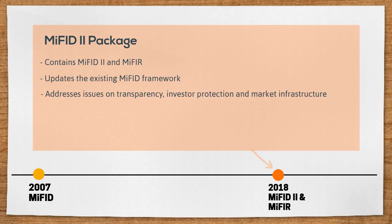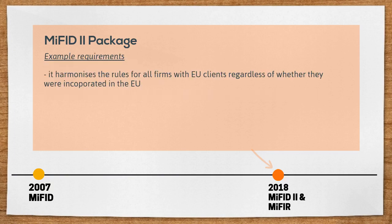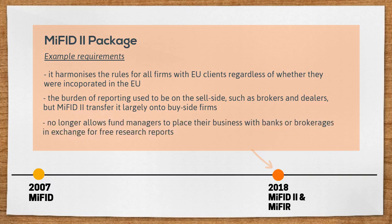MiFID II updates the existing MiFID framework and addresses issues in relation to transparency, investor protection, and market infrastructure. For example, it harmonizes rules for all firms with EU clients regardless of whether they are incorporated in the EU. The burden of reporting used to be on the sell side, such as brokers and dealers, but MiFID II transfers it largely onto buy side firms. It no longer allows fund managers to place their business with banks or brokerages in exchange for free research reports — now they have to pay for research.